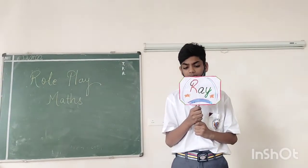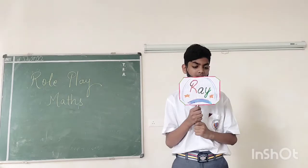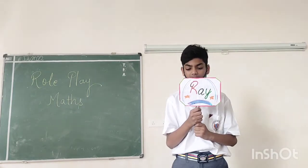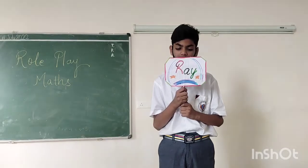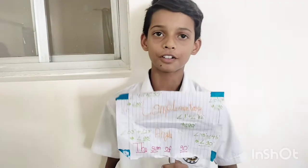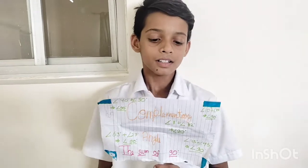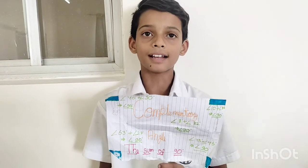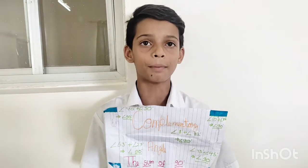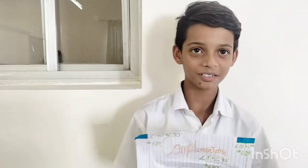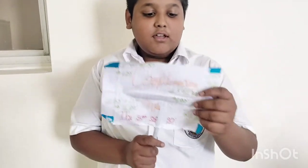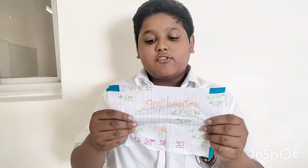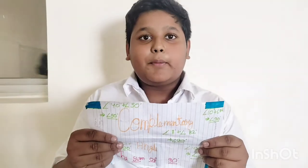Complementary angles — the two angles which form 90 degrees are always complementary angles. My name is Complementary angles. There are two angles which form 90 degrees and there are so many examples around us.